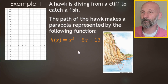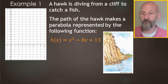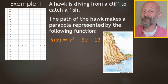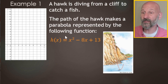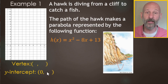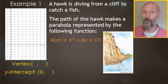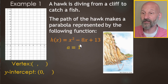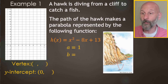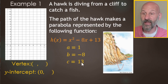Here's our scenario: a hawk is diving from a cliff to catch a fish. The path the hawk makes is a parabola represented by this function. We need to graph it on the grid, identifying the vertex and y-intercept. We need to identify a, b, and c. In this case, a equals one (it's 1x²), b is negative eight (the coefficient of the x term), and c is 13 (the constant term).